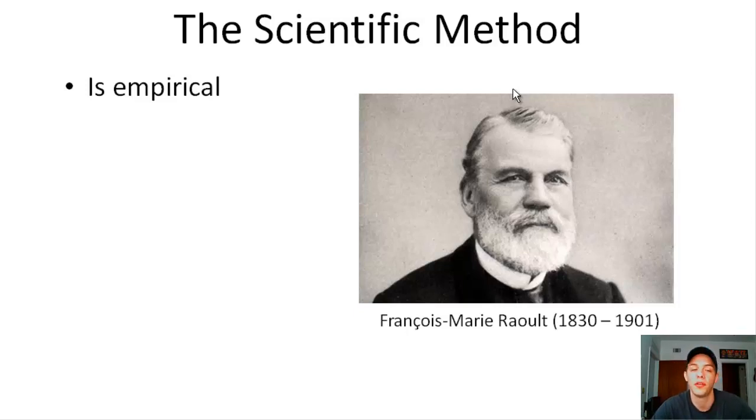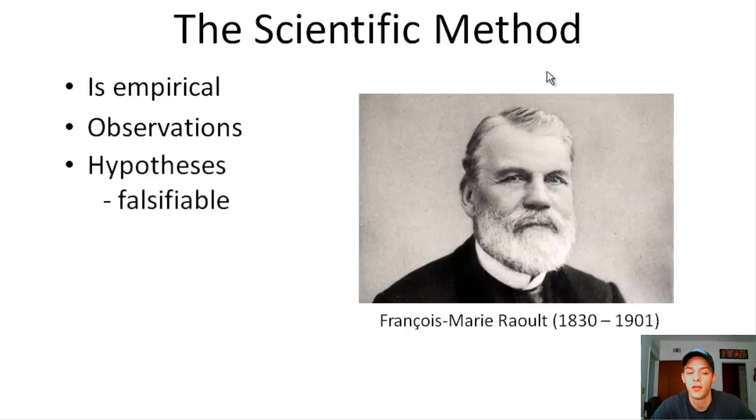So what scientists generally do is they make observations after observations after observations. And based upon these observations, they'll formulate what's called a hypothesis, or they'll formulate several hypotheses. Hypothesis is singular, hypotheses is the plural form of the word. And what a hypothesis is, it's basically a tentative explanation of a certain phenomenon that has yet to be tested. And a good hypothesis is falsifiable, meaning it can be supported or refuted by scientific experiments. So next in line comes the experiments. And those are just highly controlled procedures designed to test hypotheses and generate further observations.